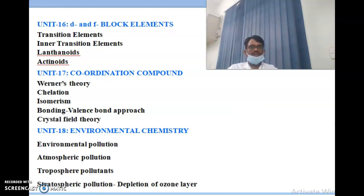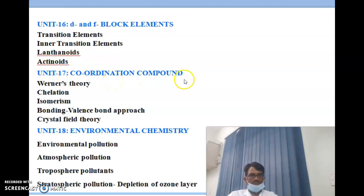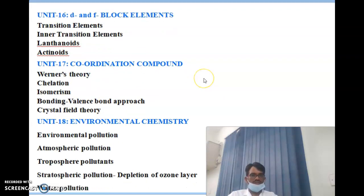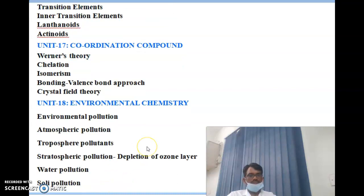Unit 6 covers d and f block elements — transition elements, inner transition elements, lanthanides, and actinides. Unit 7 is coordination compounds, covering Werner's theory, chelation, isomerism, valence bond approach, and crystal field theory. Unit 8 is environmental chemistry, covering atmospheric pollution, tropospheric pollution, stratospheric pollution including depletion of the ozone layer, water pollution, and soil pollution.